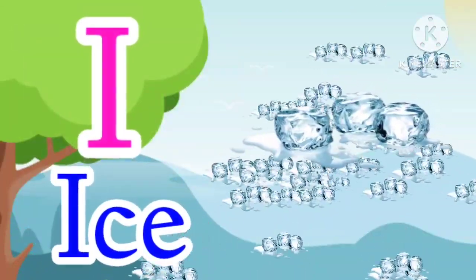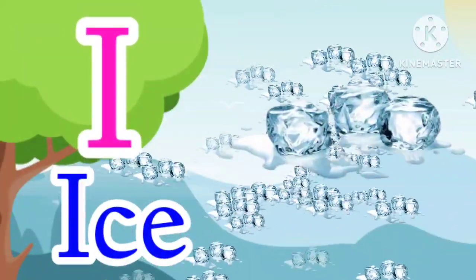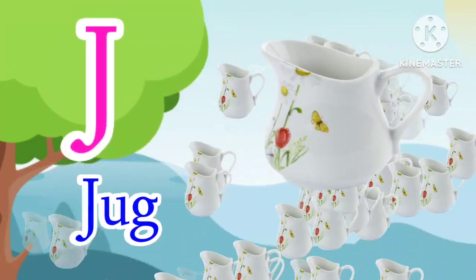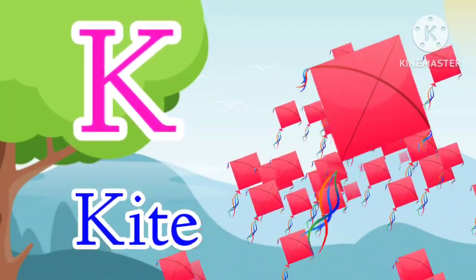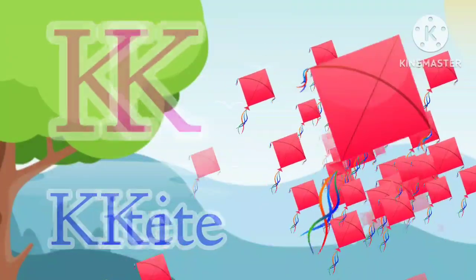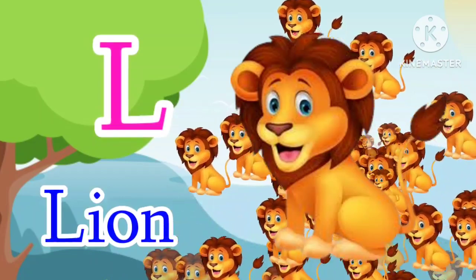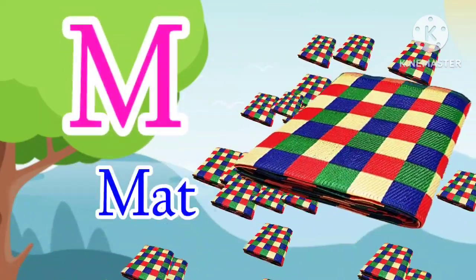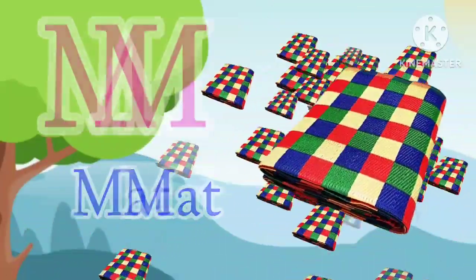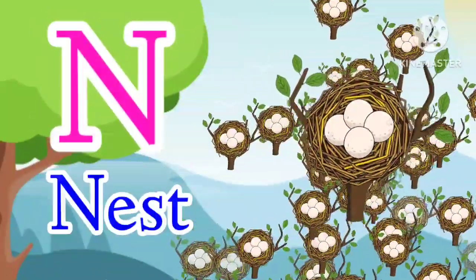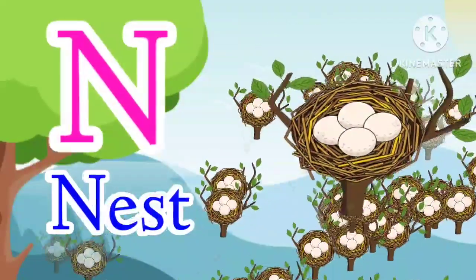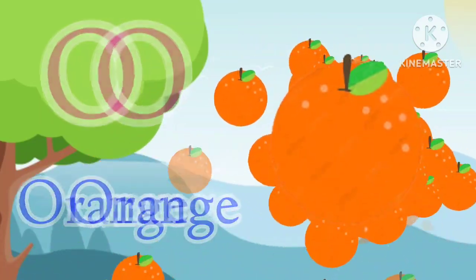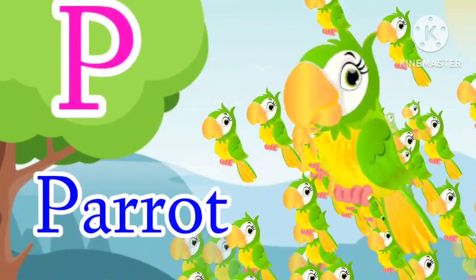I for Eyes. J for Jug. K for Kite. L for Lion. M for Mat. N for Nest. O for Orange. P for Parrot.